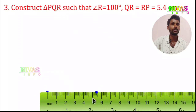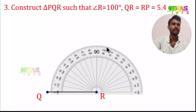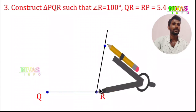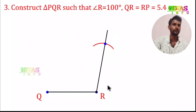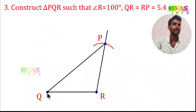I scale to 5.4 cm length and mark two points. QR is equal to 5.4 cm. Next, RP is also equal to 5.4 cm. I draw the line QR at 5.4 cm. Then at point R I draw angle R equal to 100 degrees, and from R I mark RP equal to 5.4 cm to find point P. Then I connect P and Q to complete triangle PQR.